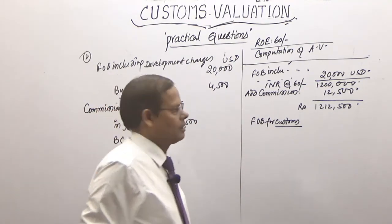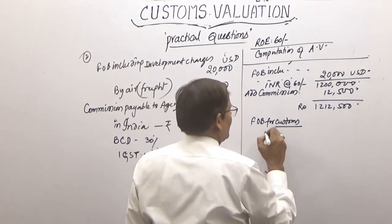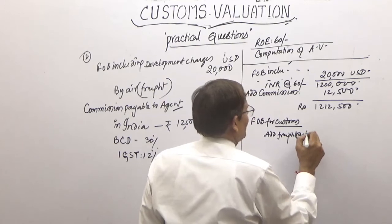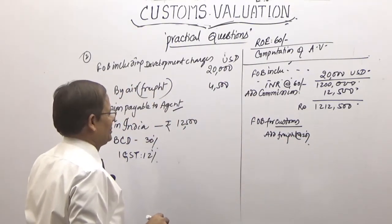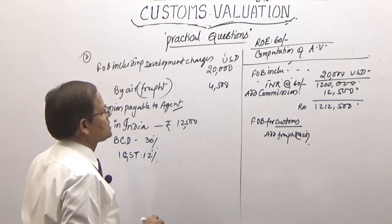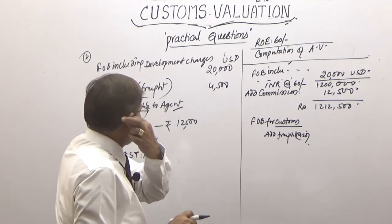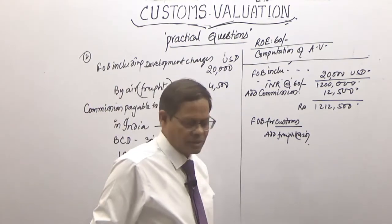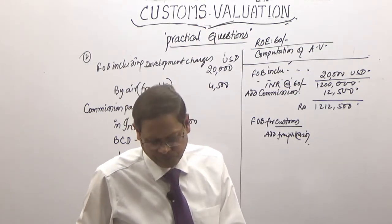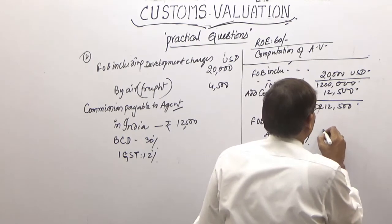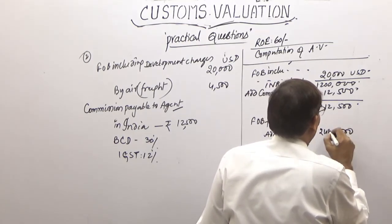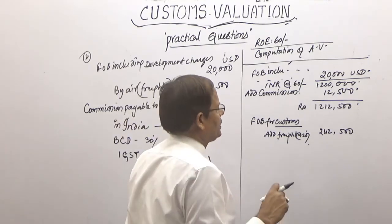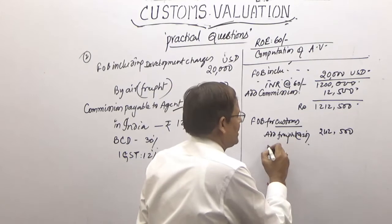Now add freight charges. Air freight is restricted to 20% of customs FOB and cannot exceed that. The actual air freight of $4,500 exceeds 20%, so we restrict it to 20% of ₹12,12,500, which comes to ₹2,42,500. Then add insurance at 1.125% of the FOB value.